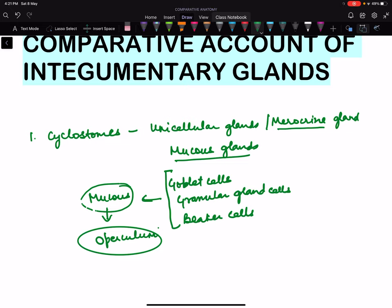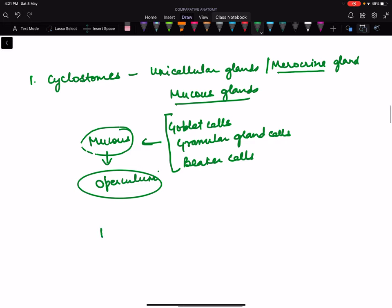And what is that? Hagfish is one type of cyclostome.